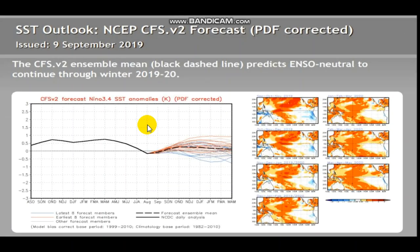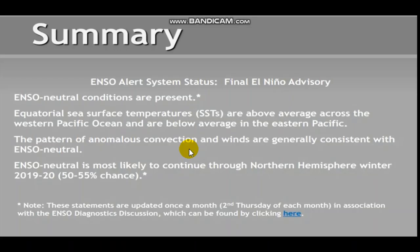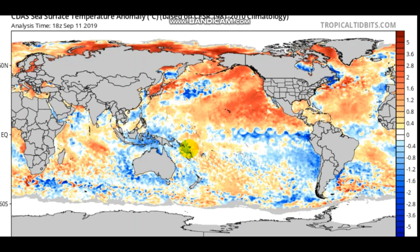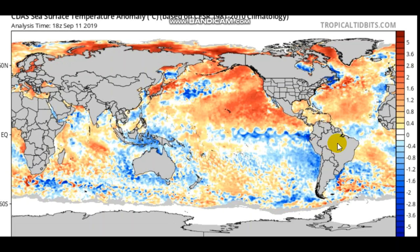Another graph shows the statistical average trending toward neutral, approaching El Niño around the November-December timeframe, then staying constant or dipping slightly toward La Niña — but overall remaining neutral. Confidence is relatively high across most models. A summary slide confirms ENSO-neutral conditions are present and forecast to continue.